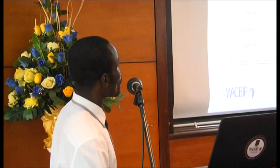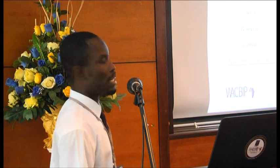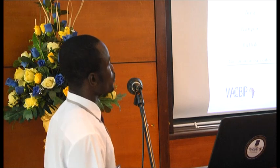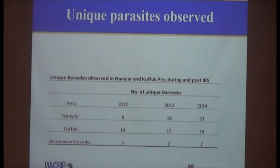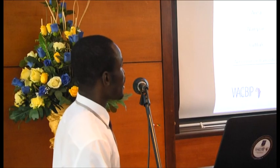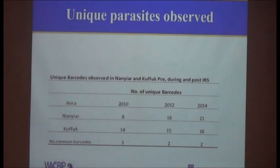For the complexity of infection, we needed to see whether as transmission reduces, diversity also reduces. We found eight unique parasite types in 2010. As the indoor residual spraying was going on, we found 18 unique parasite types circulating in 2012, and this further increased to 21 in 2014. For the other community, we had 14 unique parasite types circulating in 2010.